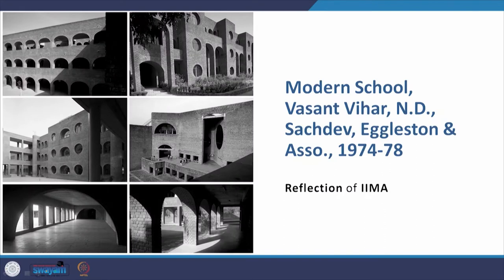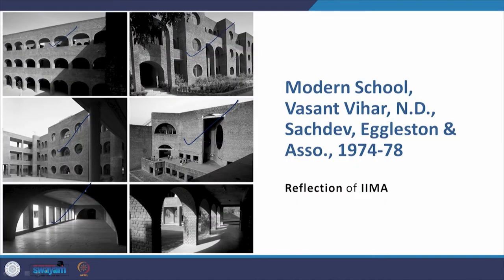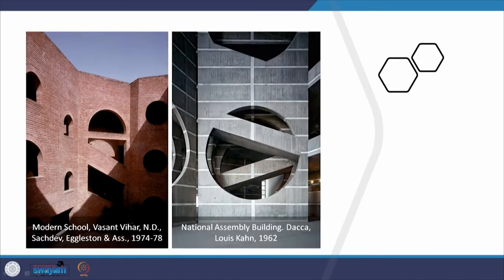The spaces and form created with exposed brick in the Modern School are so close to that of IIM Ahmedabad. You see corridors one above the other, archwork and circular cutouts that appear in Ahmedabad. The same kind of identity is reflected here — and this element was created in the National Assembly of Bangladesh and is found repeated here in the Modern School.